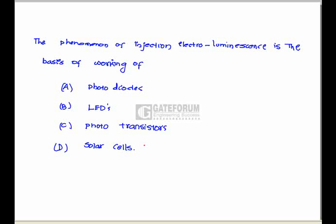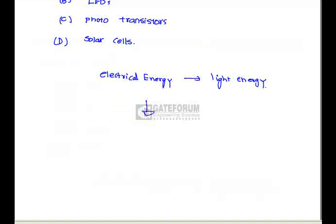The phenomenon of injection electroluminescence is the basis of working of. See electroluminescence means electrical energy into light energy means electrical signal to light conversion. See in case of photodiodes it converts light energy into electrical signals. In case of LED it emits the light proportional to the current it is carrying. In the phototransistor it takes the light as the input it produces the electrical signal. Solar cells it takes solar light as the input signal it stores the energy in the form of electrical. So option b is correct.